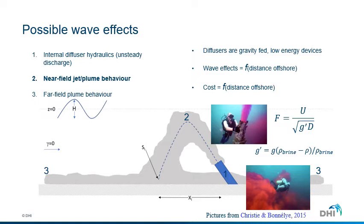For the near-field, the primary control on the dilution achieved from a negatively buoyant jet is the densimetric Froude number, where U is the jet velocity, D is the port diameter, G is gravitational acceleration, and G' is reduced gravity. SI is the dilution at the impact point, and XI is the impact point distance from the port.